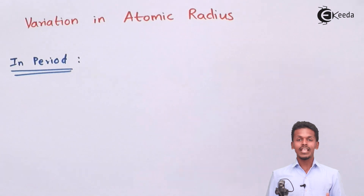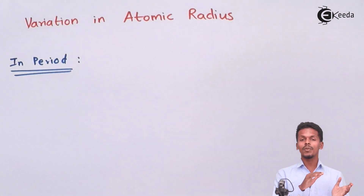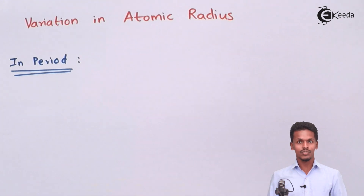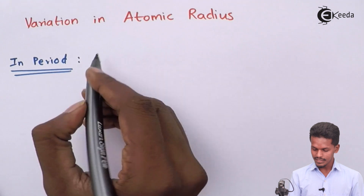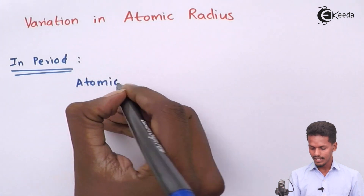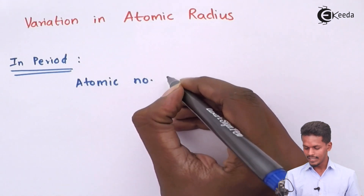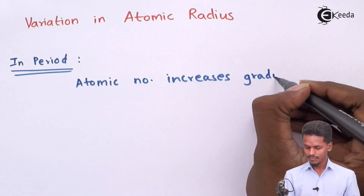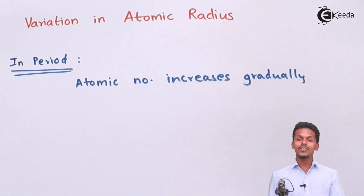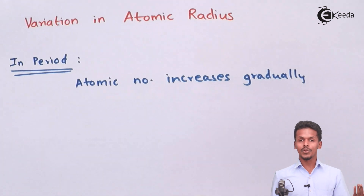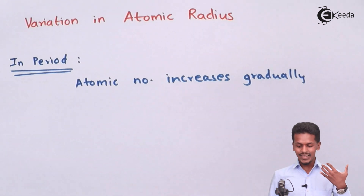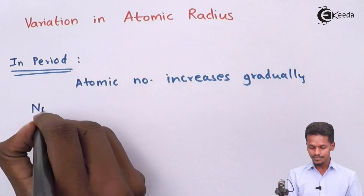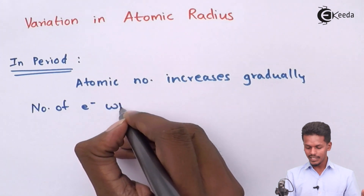So in a period, what we observe is as we move from left to right in the periodic table, the atomic number increases gradually. And because of which the number of electrons will also increase gradually.